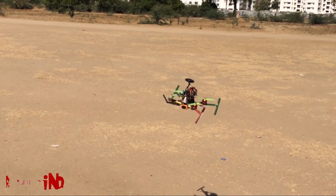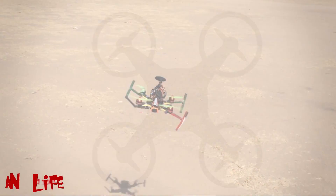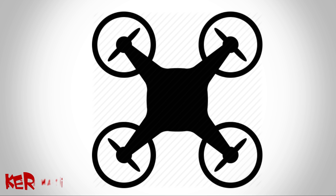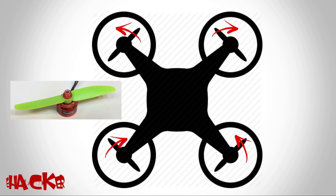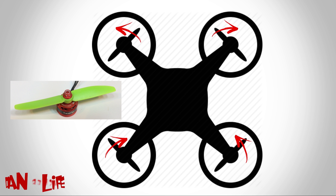A quadcopter has four motors, where two motors rotate in a clockwise direction and two motors rotate in an anticlockwise direction to neglect the moment about the center of mass of the quadcopter.